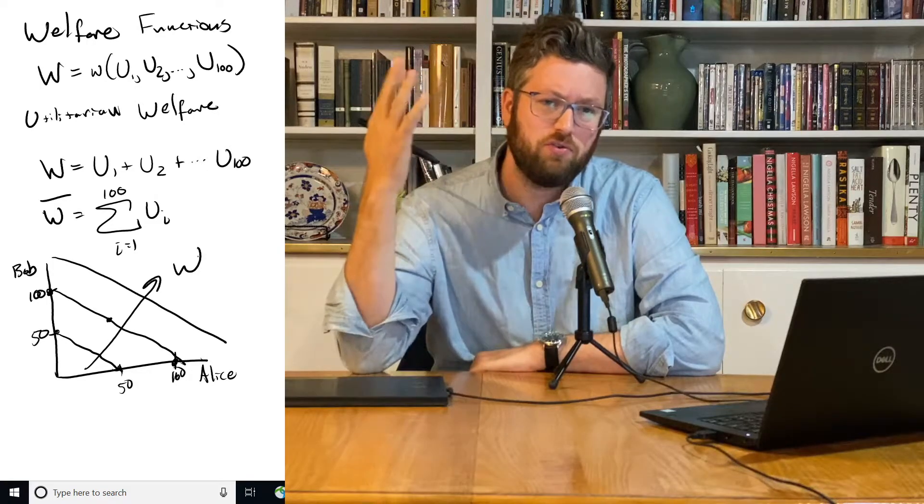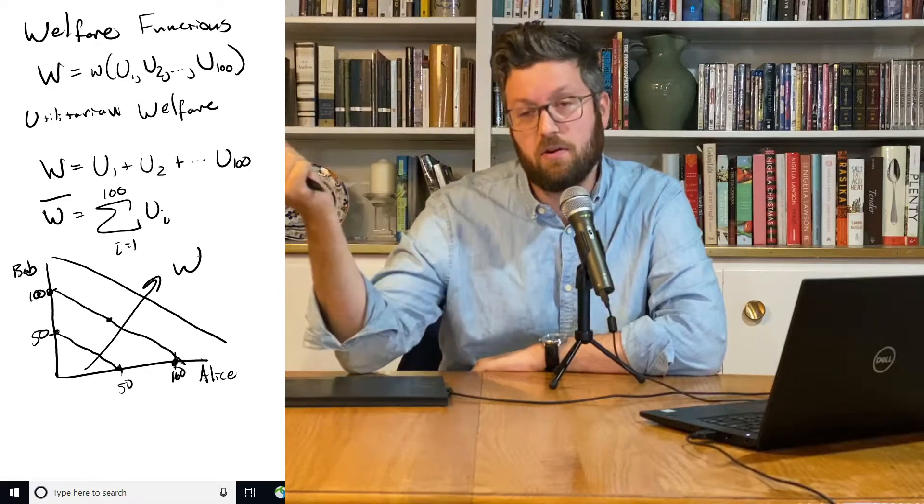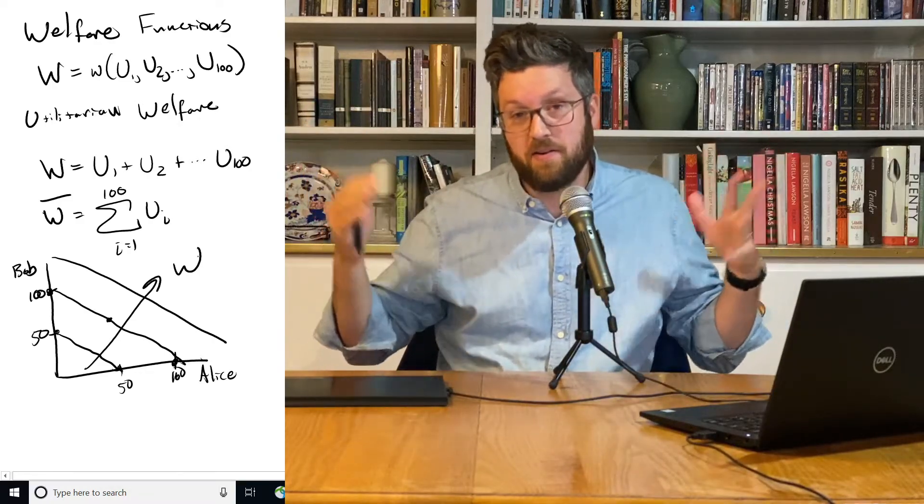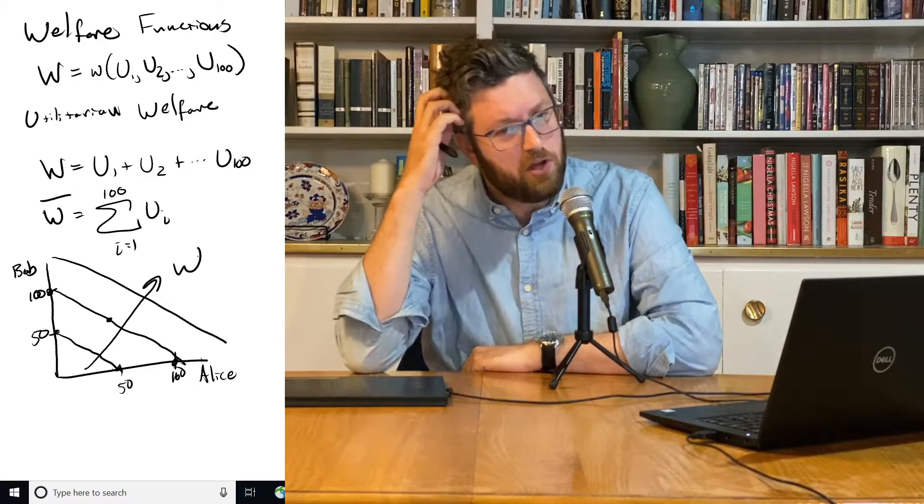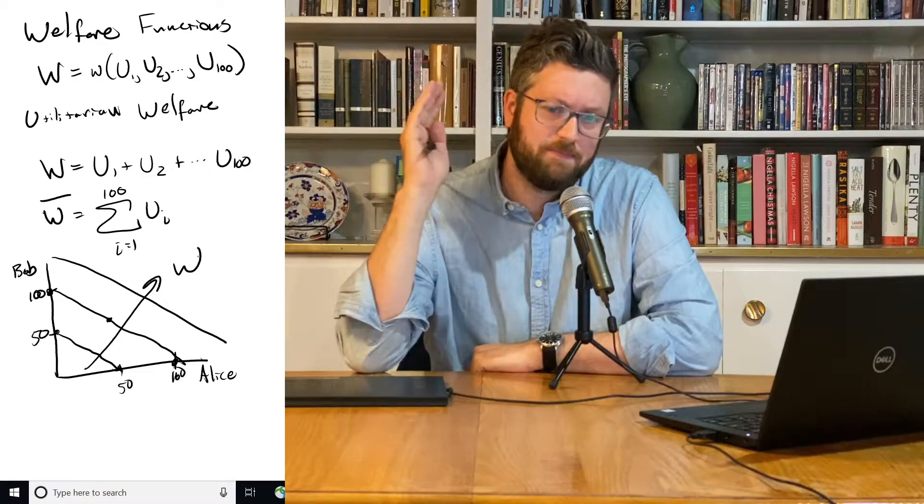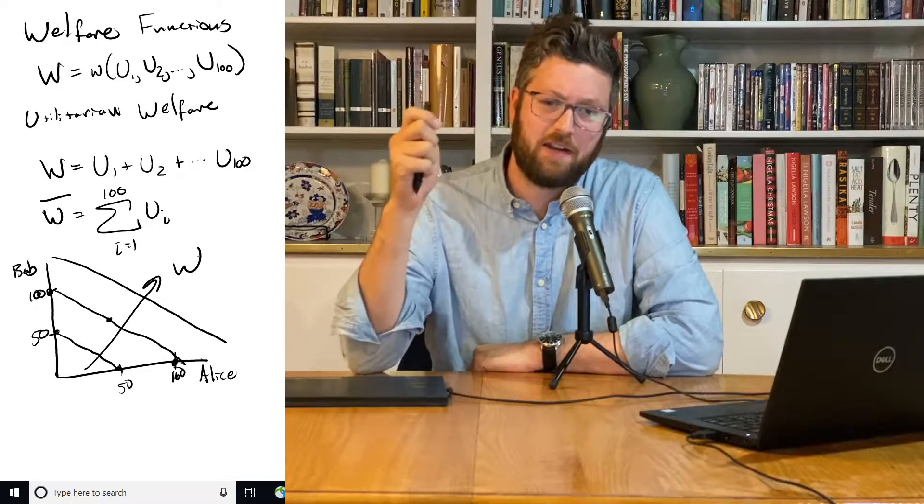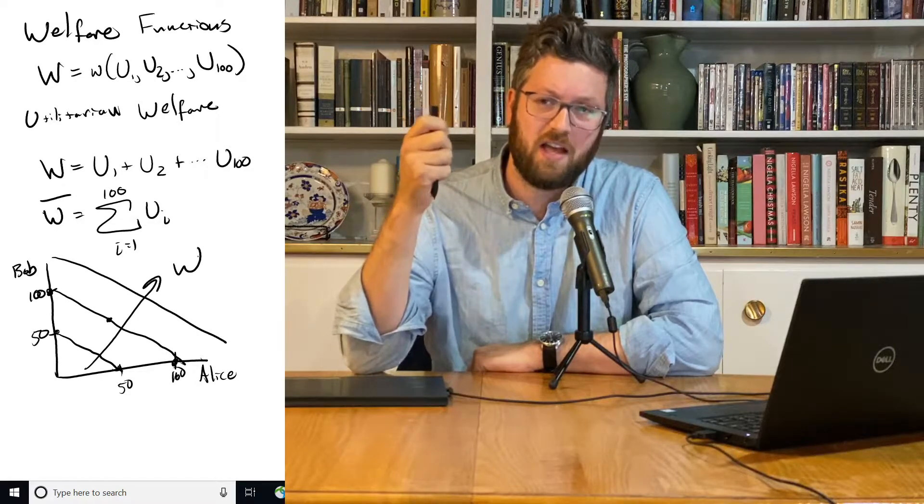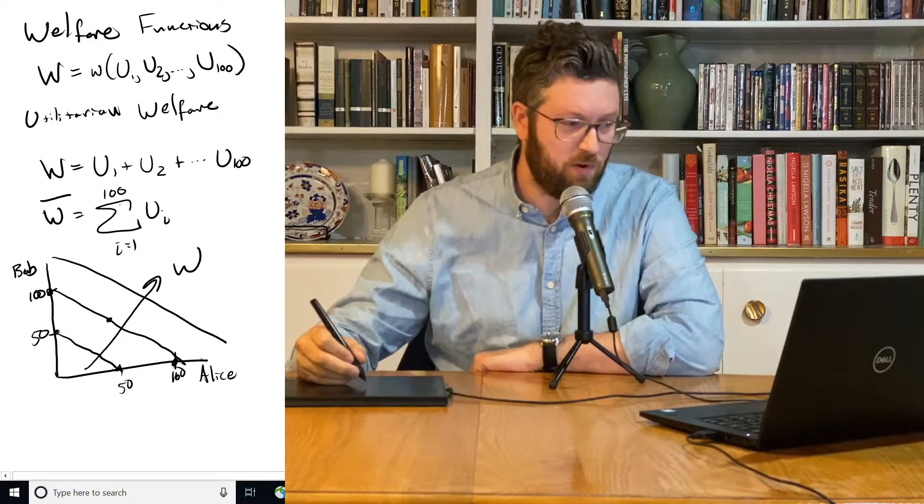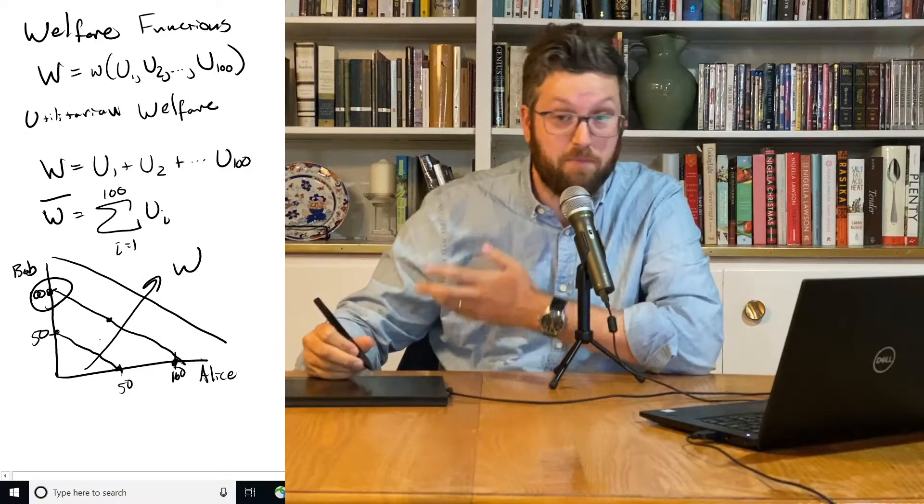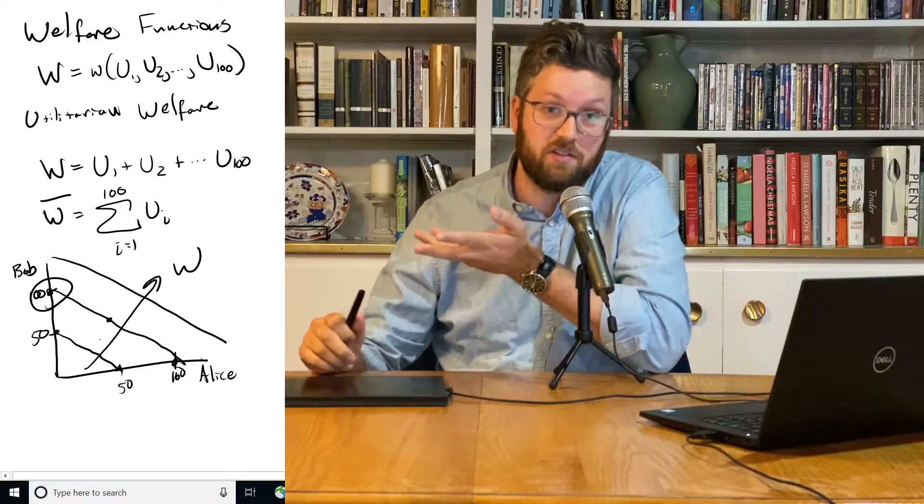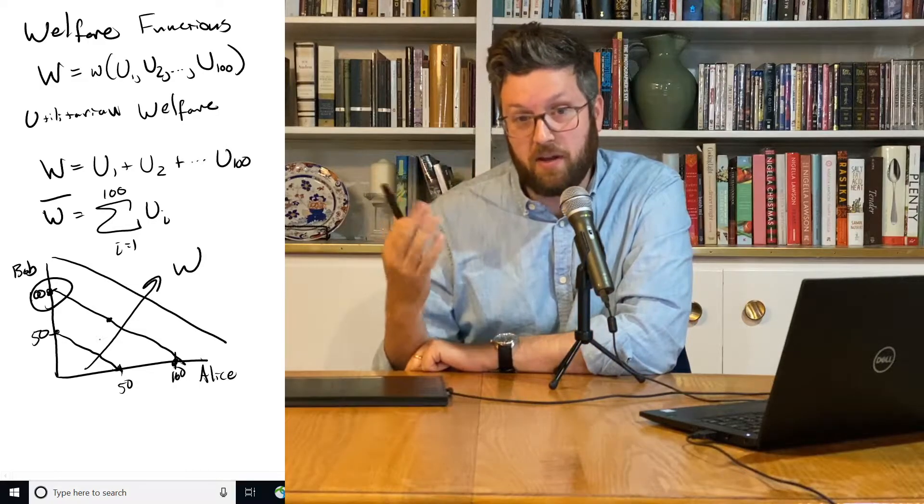If some people get huge utility and others get zero, but they add up to the same amount as everybody having a roughly equal share, this thing doesn't care. So the computer might think that this is not actually the best way to organize society because a situation where one person has utility 100 and another person has zero utility, so essentially they're dead, is a bad way to go.